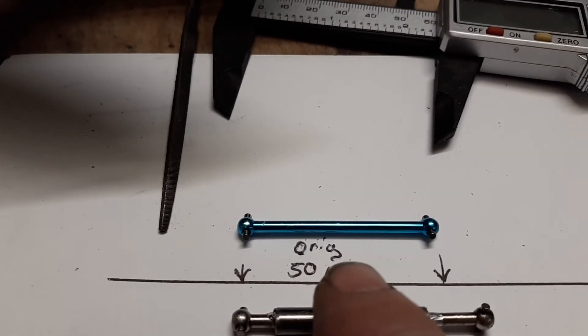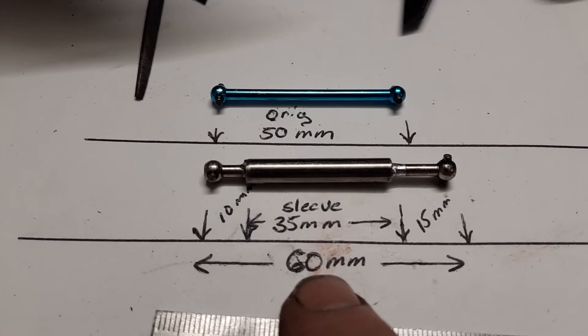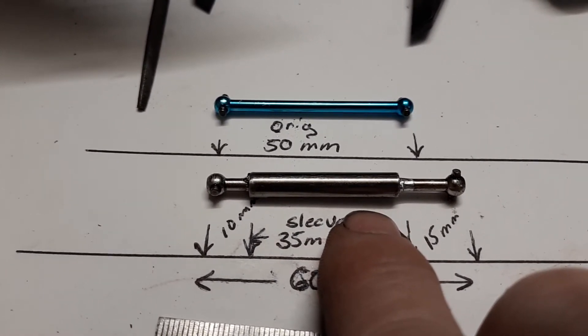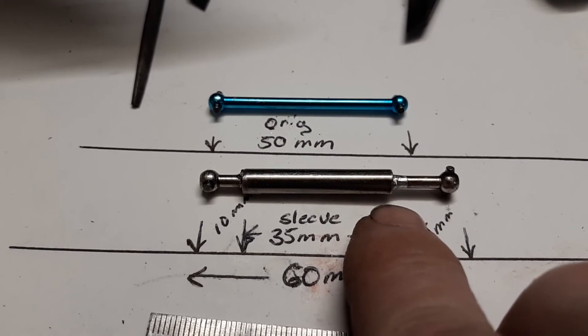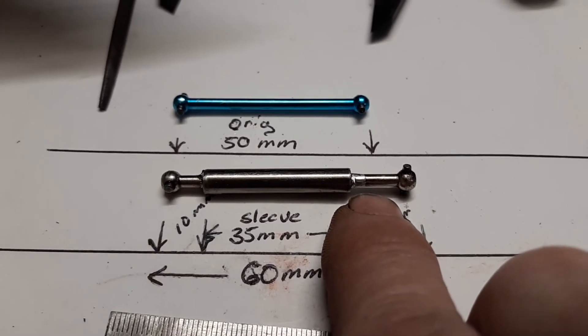So, 50 millimeters is the original size. I want to increase it basically 10 millimeters. Here's a sleeve that I use. It's actually 5 millimeters outside diameter, 3 millimeter inside diameter, which happens to be the diameter of that particular shaft for this vehicle.